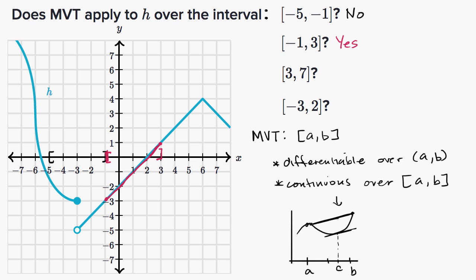What about the closed interval from three to seven? When you look at this interval, we're definitely continuous, so we meet the second criteria — but are we differentiable? A good giveaway of a point that is continuous but not differentiable is a sharp edge, because we don't have a well-defined slope of a tangent line there. Because we aren't differentiable at x equals six, we aren't differentiable over the open interval from three to seven, and so the mean value theorem does not apply.